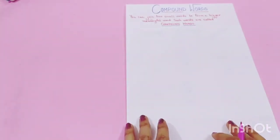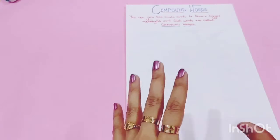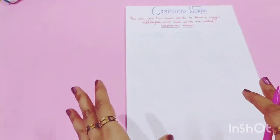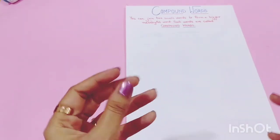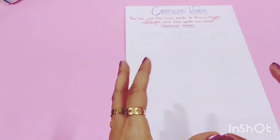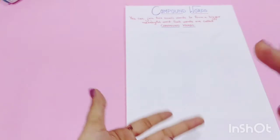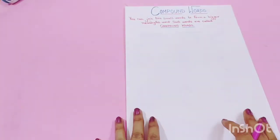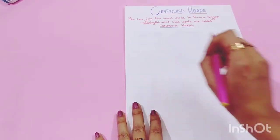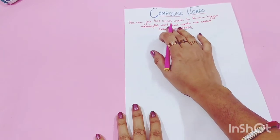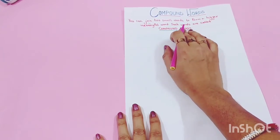Today we are going to learn compound words. What does compound mean? It is a mixture of two or more elements. You can join two small words to form a bigger meaningful word. Such words are called compound words.